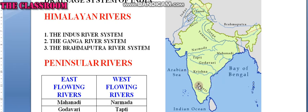River Kaveri — river Kaveri originates at Talakaveri in the Kodagu hills of Karnataka. Its length is 800 kilometers. At last it empties into the Bay of Bengal at Poompuhar.